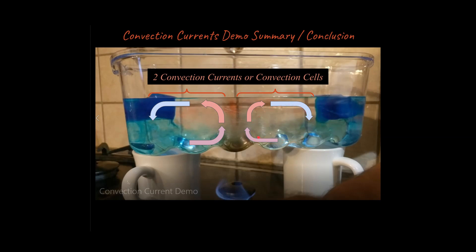So in this system we actually have two convection currents set up—they're also called convection cells.